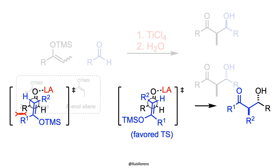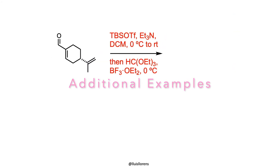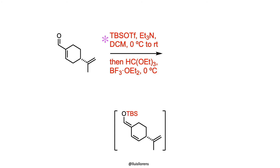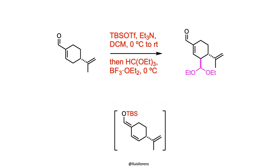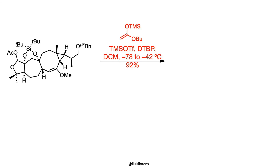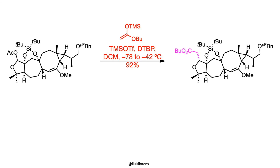For example, for a Z-enylsilane where the substituent R1 is bulky and the substituent R2 is small, this transition state will be the most favored, leading to the formation of the anti-diastereomer as the major product.